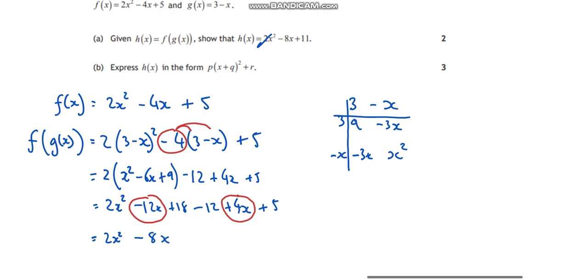And let's check our numbers. So I've got 18 take away 12, that'll give me 6. Add on the 5, fantastic, I've got plus 11.